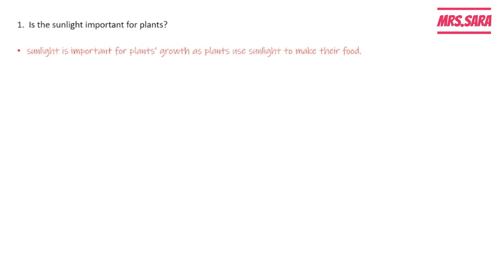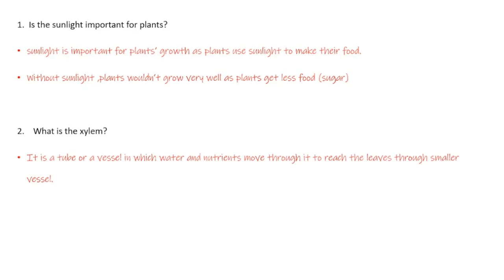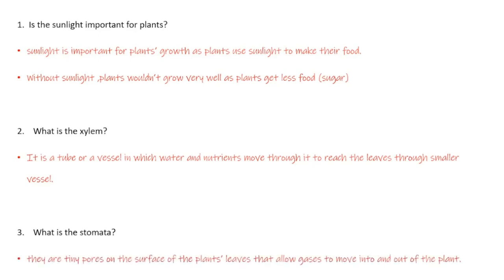Is sunlight important for plants? Yes — sunlight is important for plant growth because plants use sunlight to make their food. Without sunlight, plants wouldn't grow very well, as plants would get less food, which is called sugar. What is xylem? Xylem is a tube or vessel through which water and nutrients move up to reach the leaves through smaller vessels. What is stomata? Stomata are tiny pores on the surface of the plant's leaves that allow gases to move into and out of the plant.